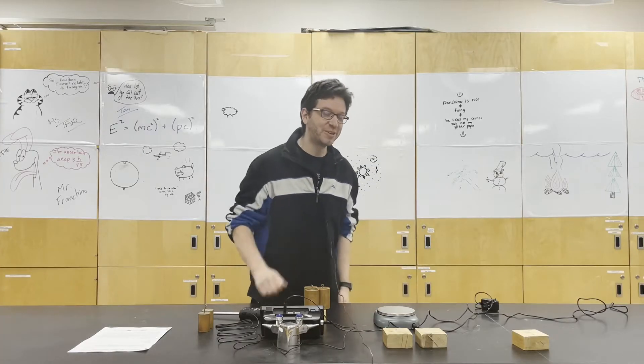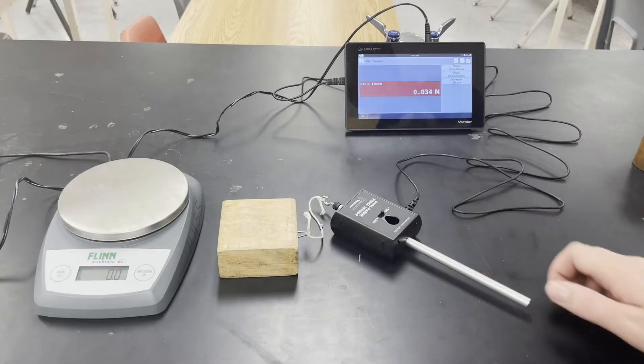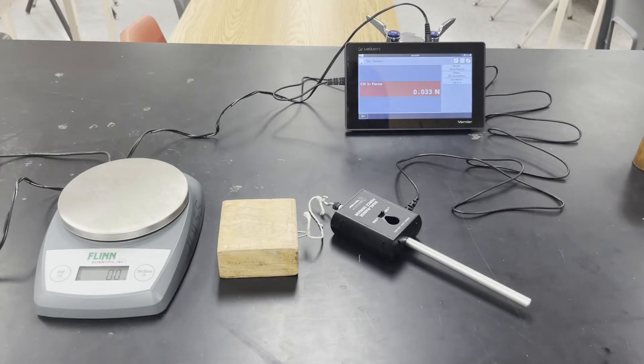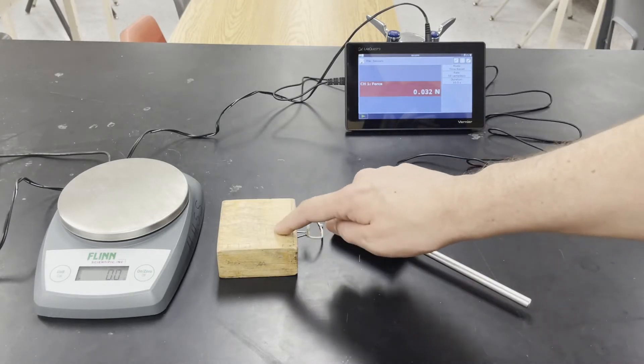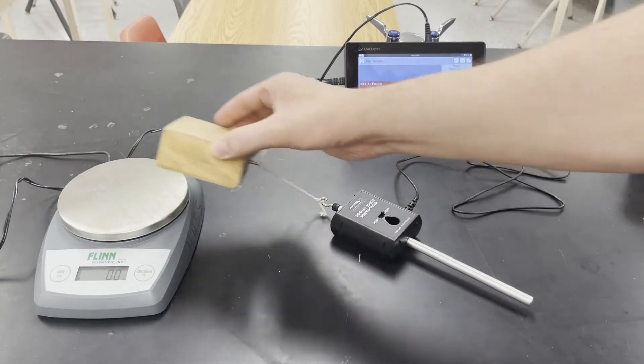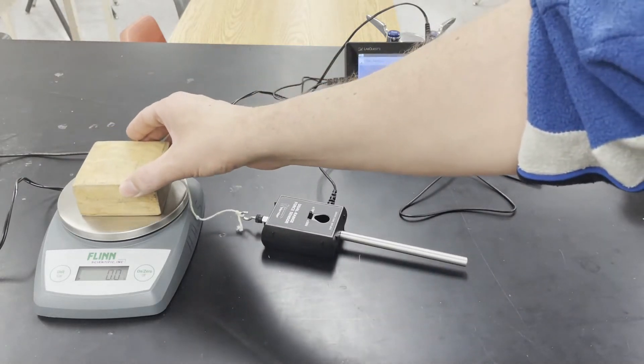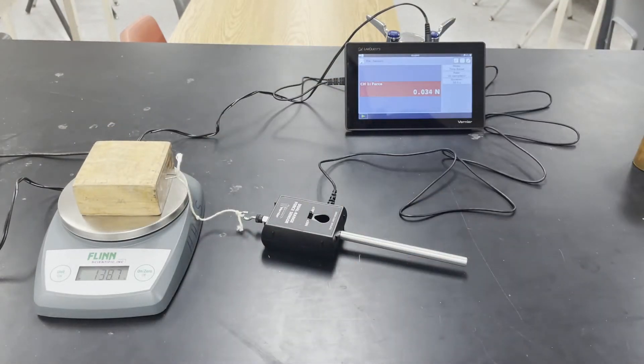Alright, let's come back here and we're going to do the lab together. We're going to start this lab by first figuring out the mass of one of these blocks that we're going to be pulling. I'm going to put that on our scale and we read 138.6 grams.